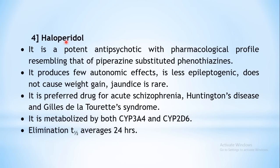The next class is butyrophenones, with three examples. The first is haloperidol, a potent antipsychotic whose pharmacological profile resembles piperazine-substituted phenothiazines. Though classified separately, it produces few autonomic effects, is less epileptogenic — meaning less tendency to precipitate seizures — and does not cause weight gain or significant metabolic changes. Jaundice occurs very rarely.